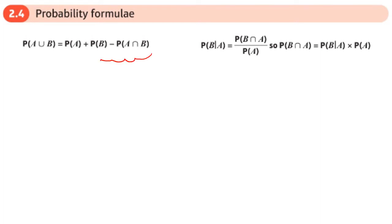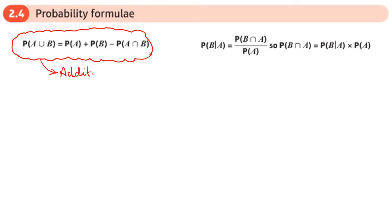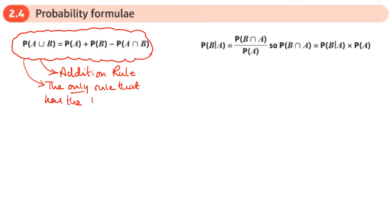The first thing is this formula here — this is called the addition rule, because you're adding here. Out of all the rules we have, this is the only rule that has the union symbol in it. So if you've got a question where you're trying to find a union and you're just using rules, no Venn diagram, then this is the rule you're going to go to.